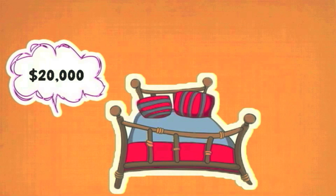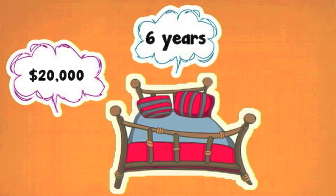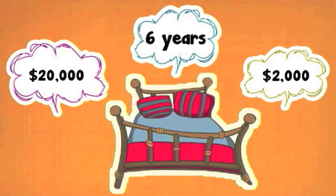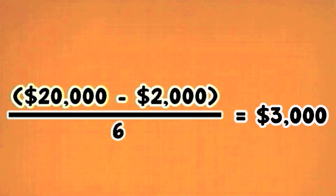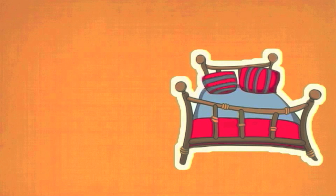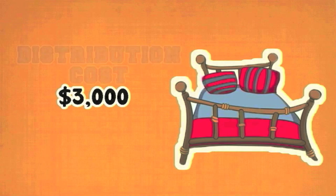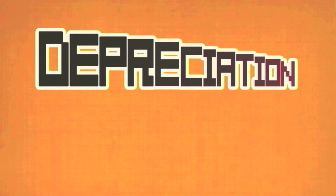How about if we knew that the motel furniture costed $20,000, which was planned to be kept for 6 years? How would you find the yearly depreciation amount if you knew the value of the furniture will be $2,000 after 6 years? We would take the historical cost of $20,000 and minus it by the expected residual value of $2,000 and divide that by the estimated life of 6 years. From that, we would get $3,000 for the depreciation amount. Don't forget, furniture isn't an administrative expense — it's a distribution cost.